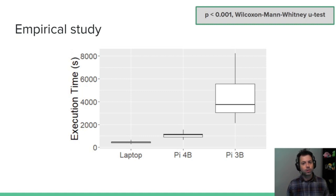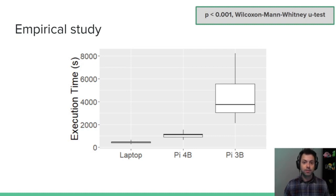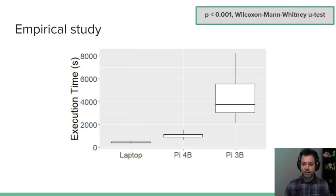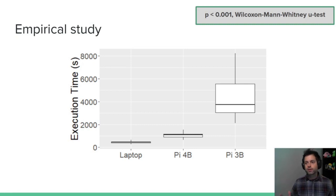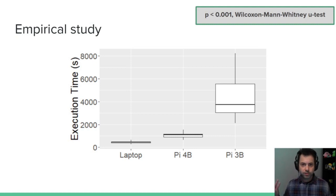On the other side, we looked at how long convergence actually took, and this is where things get more interesting. The laptop took very little time — about 500 seconds on average. The Raspberry Pi 4 took a little bit longer, and the Pi 3 took even longer than that, with statistical significance established between each of these box plots. So convergence is possible, but the less power and memory your device has, the longer it takes — which intuitively makes sense. The point was to prove feasibility.